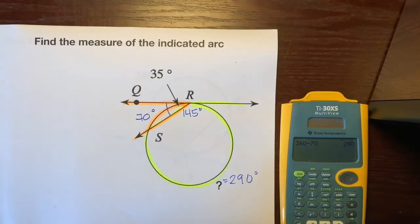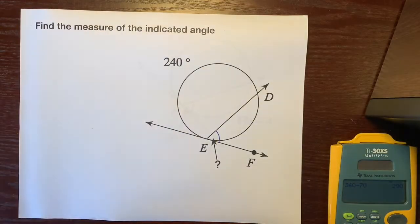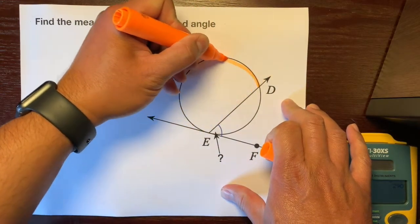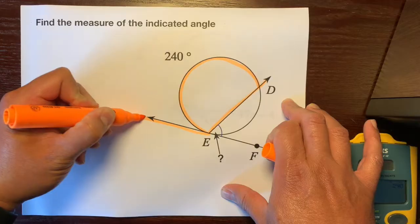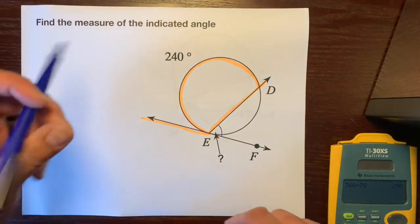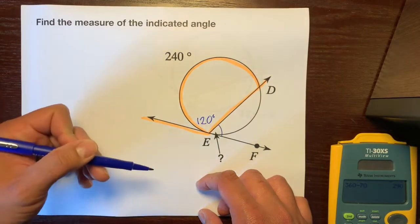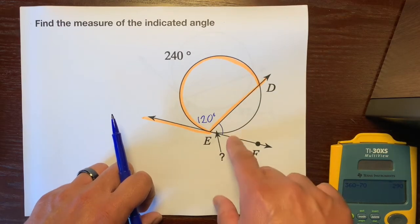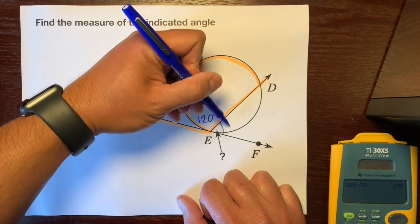Let me show you a different example. It says find the measure of the indicated angle. We have the arc right here, and this arc is being eaten by this angle. The angles are half the measure of the arcs that they're intercepting. So we take 240 divided by 2, which is 120 degrees. But we're trying to find this angle where the question mark is pointing, and we know these angles are supplementary, so 180 minus 120 is 60 degrees.